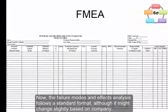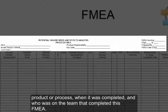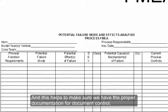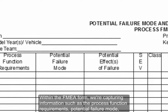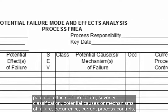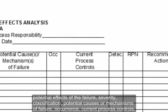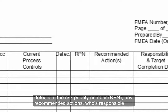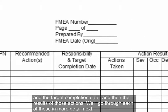The failure modes and effects analysis follows a standard format, although it might change slightly based on company. In the top portion or the header of the form, we're capturing information on the type of product or process, when it was completed, and who was on the team that completed this FMEA. This helps to make sure we have the proper documentation for document control. Within the FMEA form, we're capturing information such as the process function requirements, potential failure mode, potential effects of the failure, severity, classification, potential causes or mechanisms of failure, occurrence, current process controls, detection, the risk priority number or RPN, any recommended actions, who's responsible on the target completion date, and then the results of those actions.